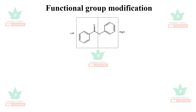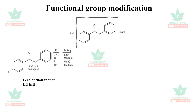Let us take an example structure with a left half and a right half. On the left side, the R group is substituted with different groups: CH₃, Cl, F, and CN. It was found that when substituted with F, the biological activity is highest.